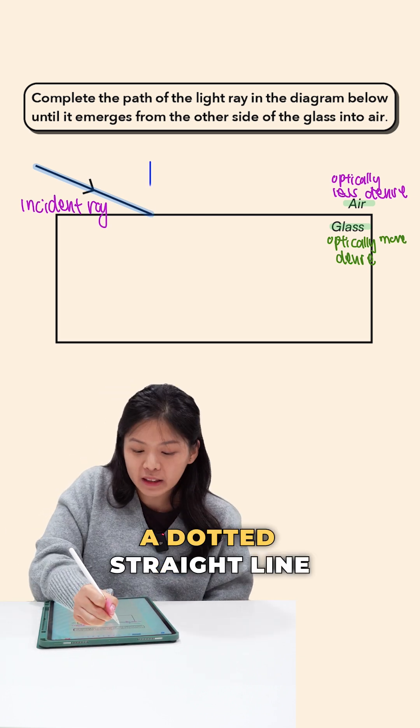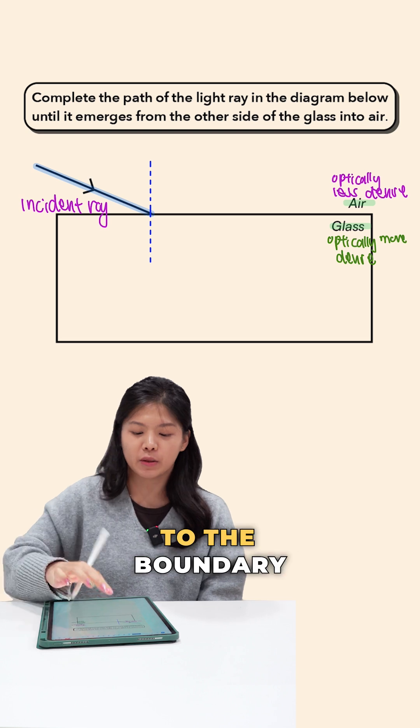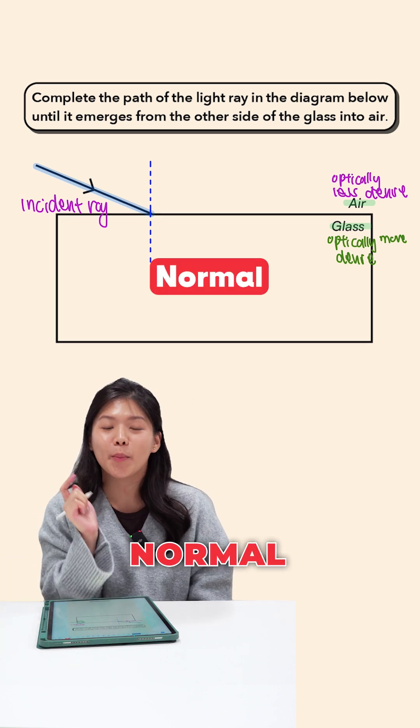And at this point of incidence, let us draw a dotted straight line perpendicular to the boundary. And this is known as our normal.